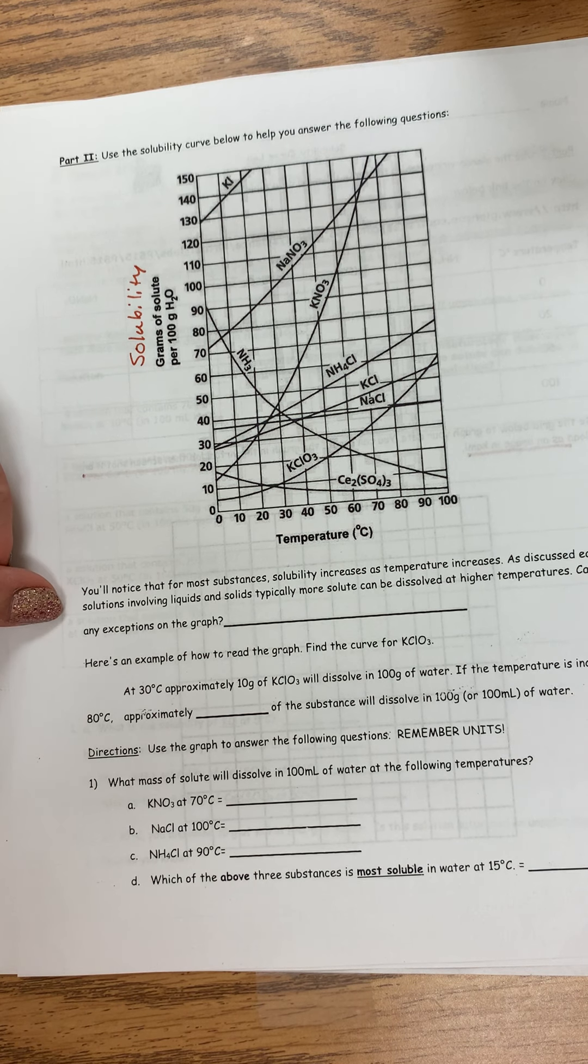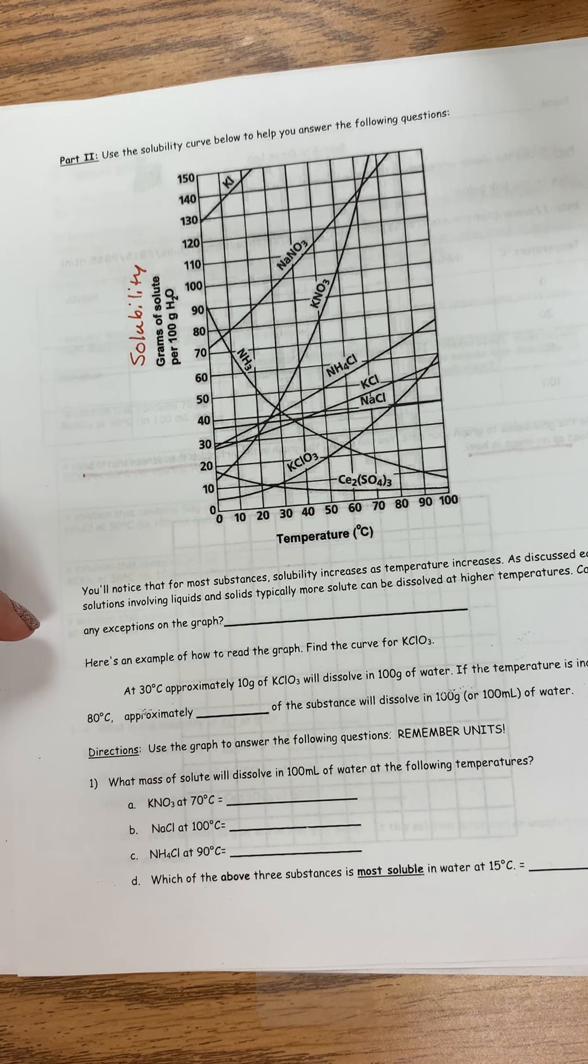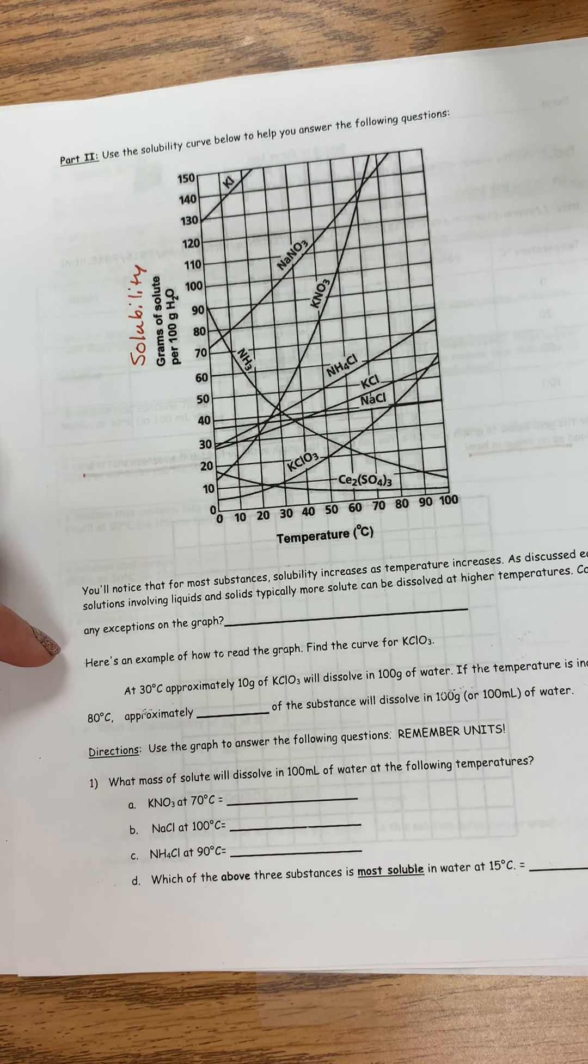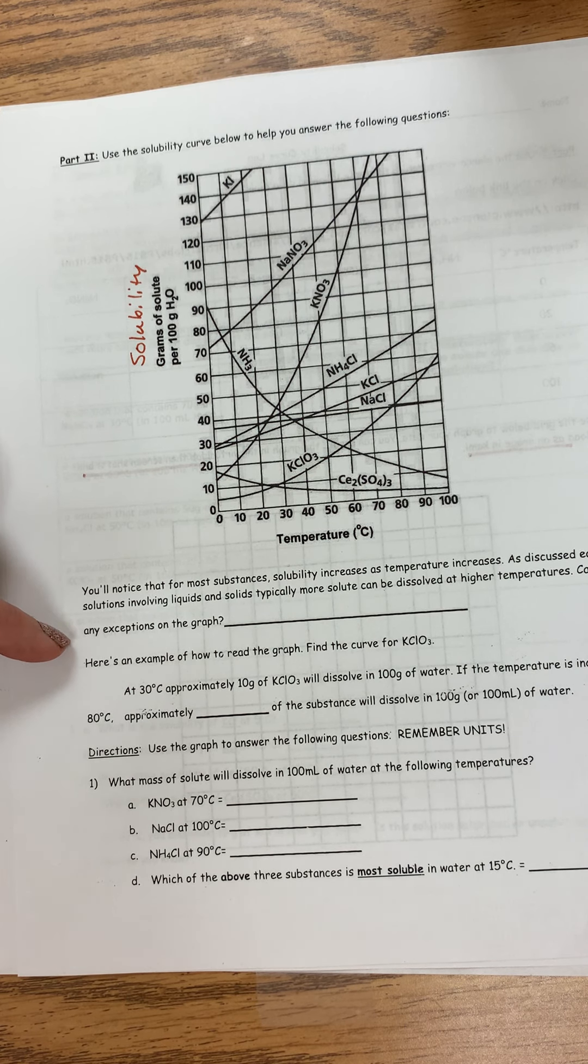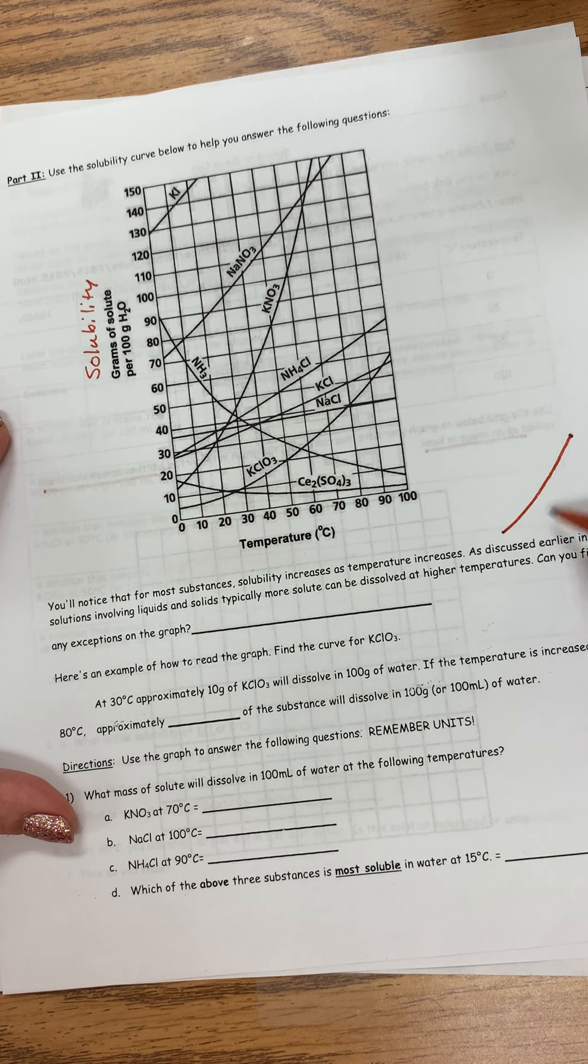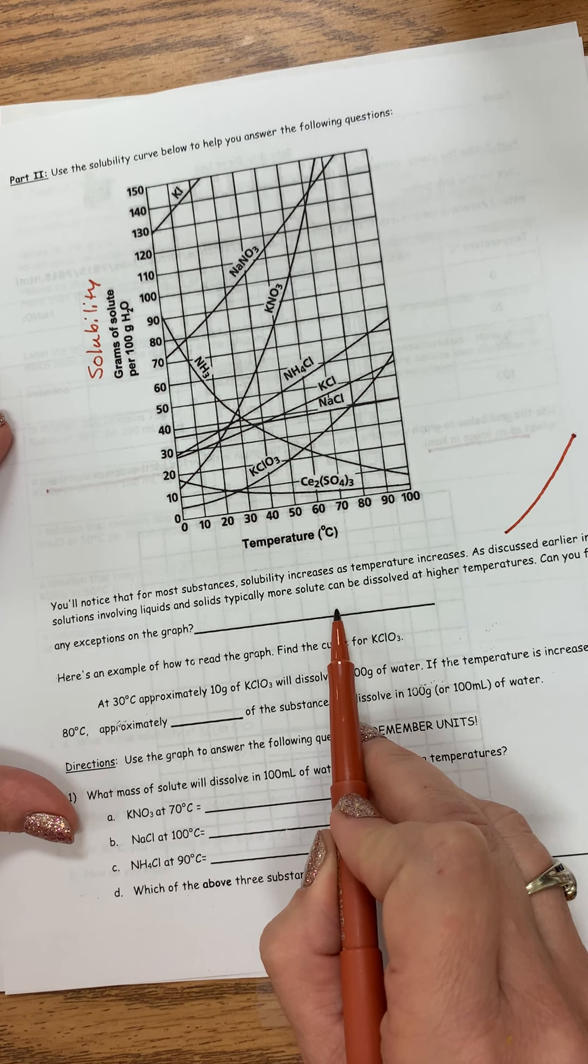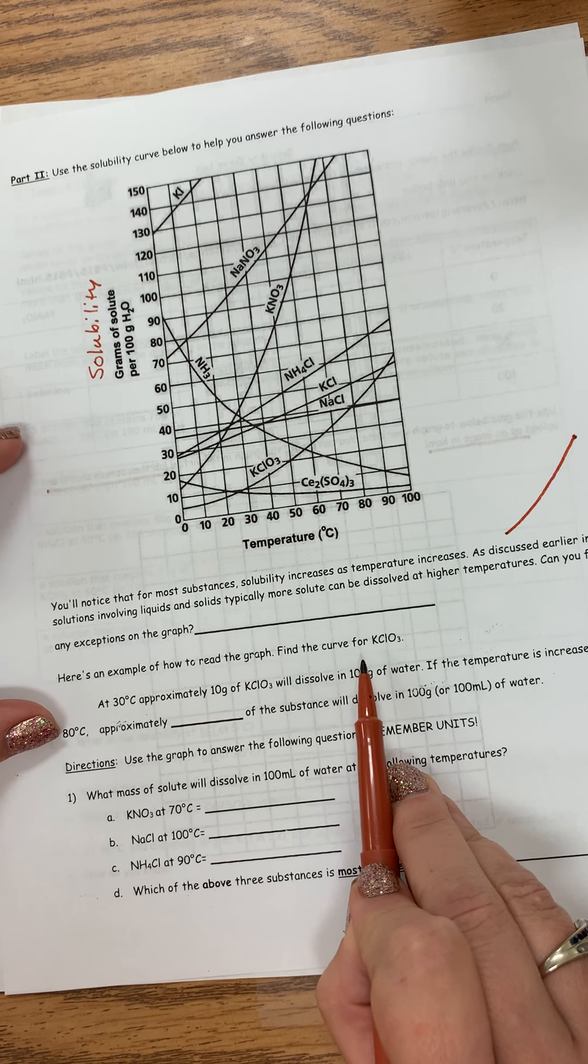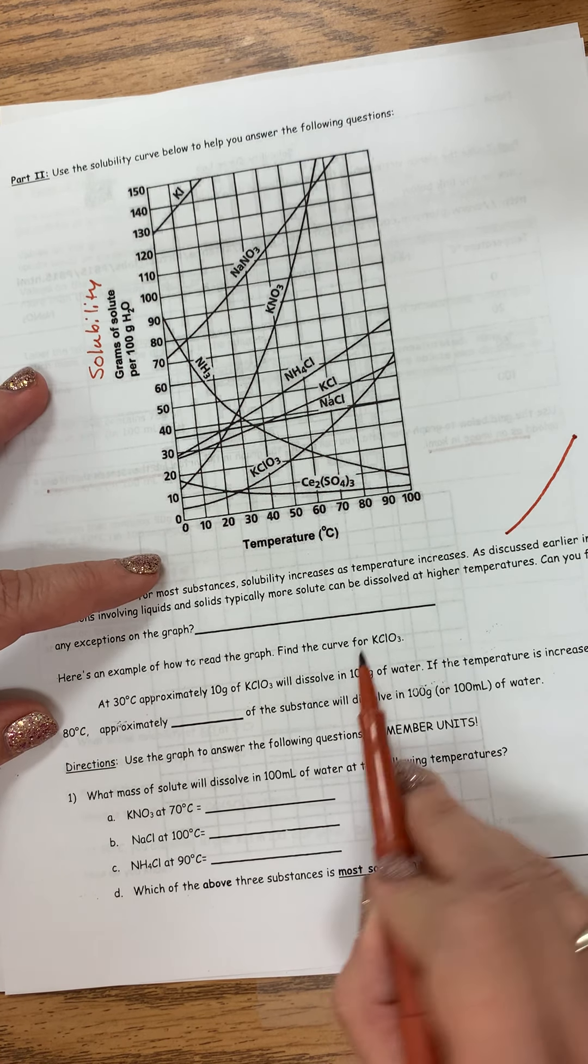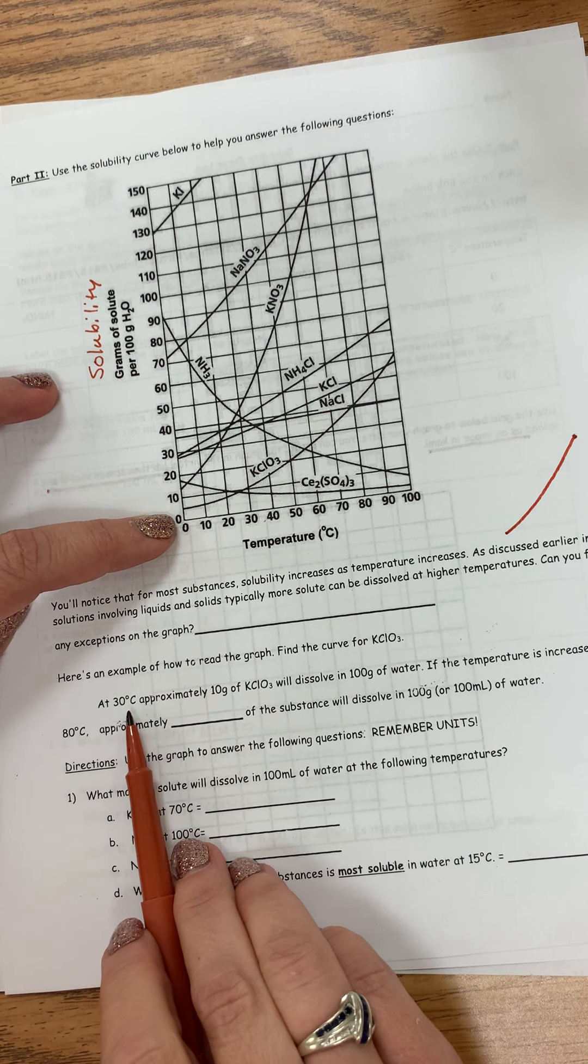So you're going to, got a couple questions to answer here. Notice that for the first substance, solubility increases as temperature increases. As discussed earlier, solutions involving liquids and solids, typically more solute can be dissolved at higher temperatures. Can you find any exceptions? So your graph should be going in an upward motion. So if there's a graph that's not following this pattern right here, going upward from left to right, then that is an exception. So you would put that chemical symbol here. Here's an example of how to read the graph. Find the curve for KClO3. So that's right here. This graph right here.